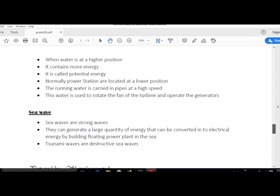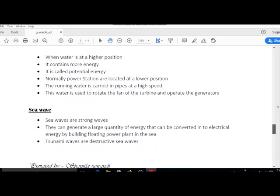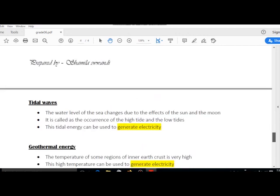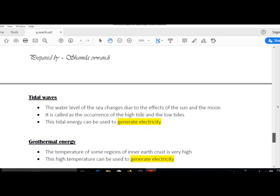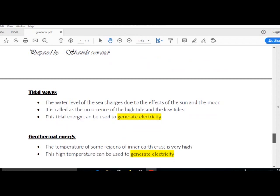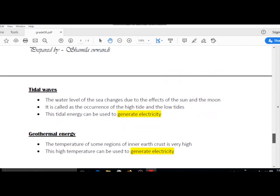Tidal waves: The water level of the sea changes due to the effects of the sun and the moon. It is called the occurrence of high tide and low tide. This tidal energy can be used to generate electricity.